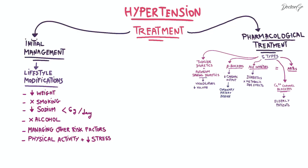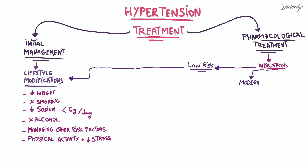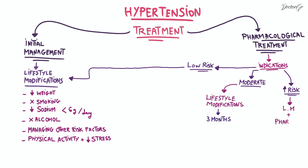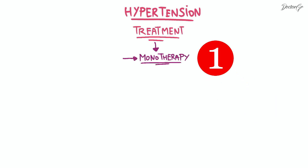Treatment indications depend on cardiovascular risk assessment. For low-risk patients, starting with lifestyle modifications alone may be sufficient. Moderately at-risk patients can receive lifestyle modifications for three months, while high-risk patients require lifestyle modification combined with medical treatment, starting with monotherapy as a first-line approach.